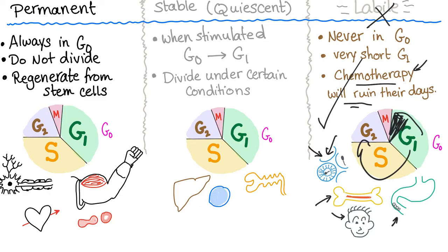These are the different cell types: permanent, stable, and labile. Permanent cells always stay in G0. Labile cells never stay in G0. Stable cells are the nice guys in between — they sit in G0 but can get stimulated to divide and enter the cell cycle, like the great liver cells from the Greek mythology story.